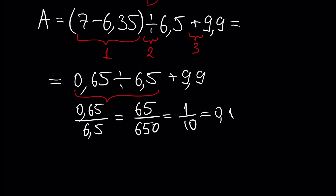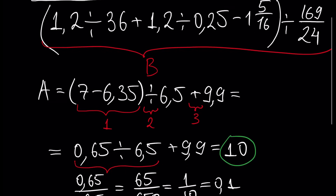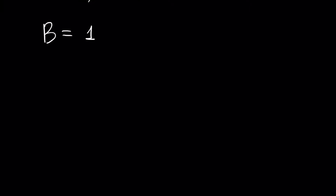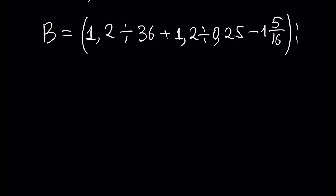1 over 10 is 0.1, and A, all in all, will be equal to 10. Now, what about B, which is in the denominator of our problem? Let's rewrite it. B is equal to 1 and 2 divided by 66 plus 1.2 divided by 0.25, minus 1 and 5 over 16, and all of these divided by 169 over 24.